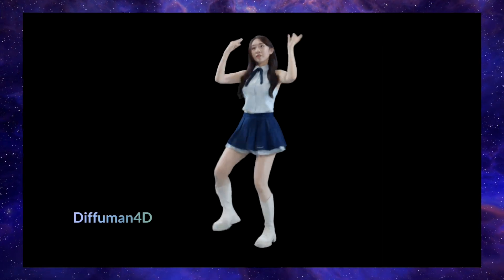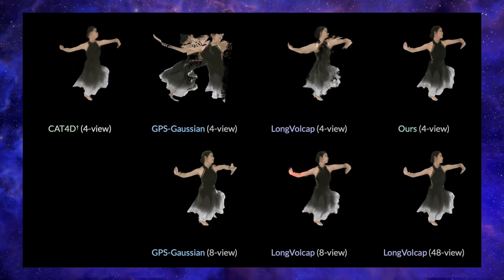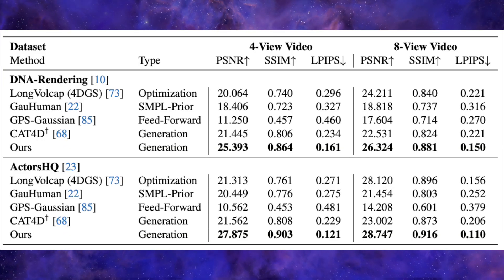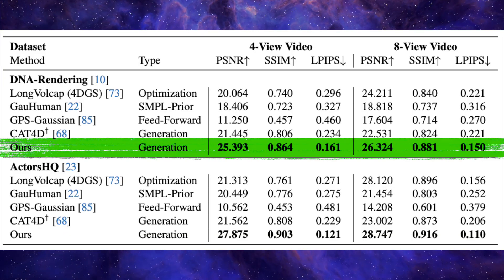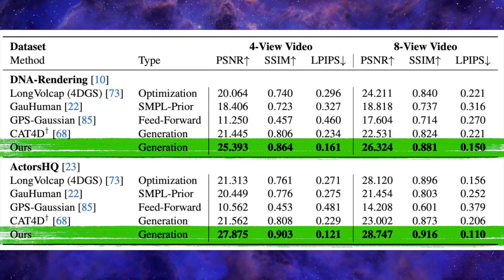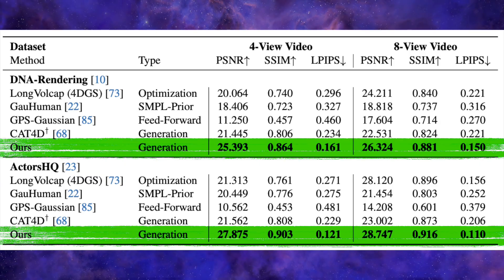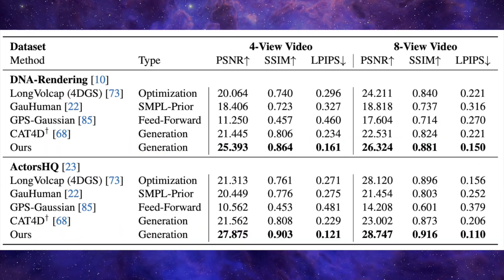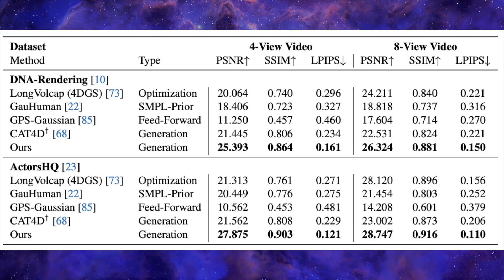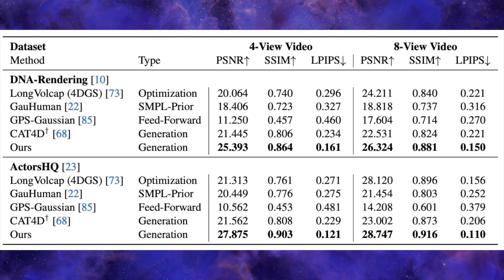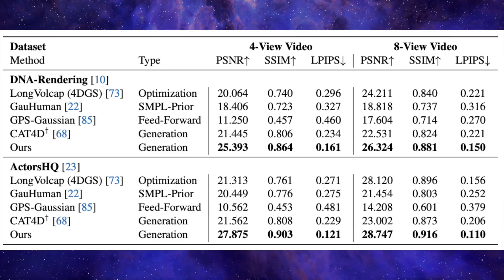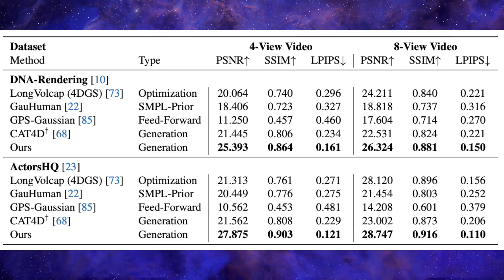The developers have put it head-to-head with all the other top models out there, and the results speak for themselves. Looking at the benchmarks in their paper, DifHuman 4D consistently outperforms existing methods. We're talking about comparisons to tools like Cat4D, GPS Gaussian, and the well-known Long Volcap. On the ActorsHQ dataset using only four input views, DifHuman 4D scores an incredible 27.8 on the PSNR quality metric, while the next best competitor, Cat4D, is stuck at 21.5. That is a huge difference in visual quality.